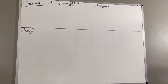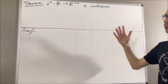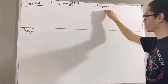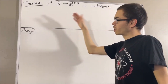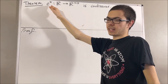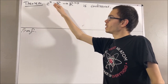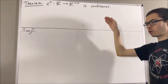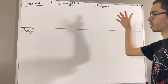Hello! In this video, we are going to prove the following theorem: e to the x is continuous. Now, let's first remind ourselves what e to the x is. If you recall, e to the x is the limit of 1 plus x over n to the power of n, for every real number x.